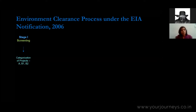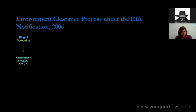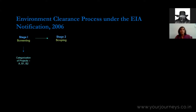Category A projects are scrutinized by a body called the Expert Appraisal Committee, or EAC, which gets into the details and either recommends or does not recommend a project for clearance. Category B projects are scrutinized by a State Environment Impact Assessment Authority. There is a distinction between B1 and B2 projects: B1 projects go through the whole environmental clearance process, whereas B2 projects are exempted from public hearings. As of the 2006 notification, there are about three categories of B2 projects.